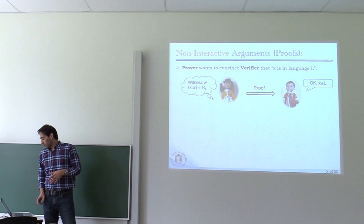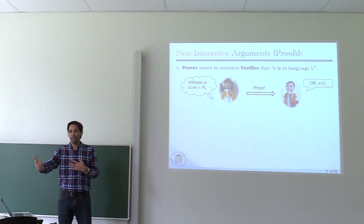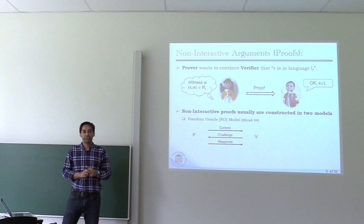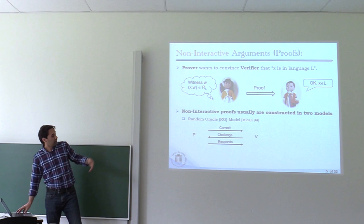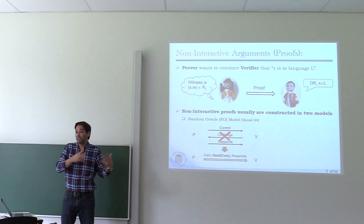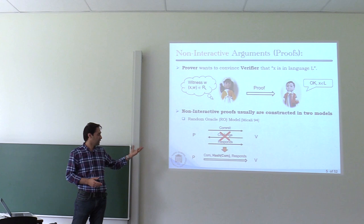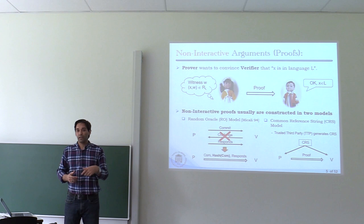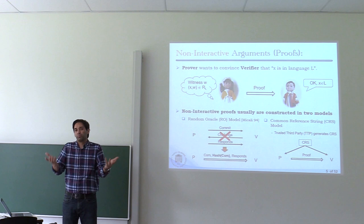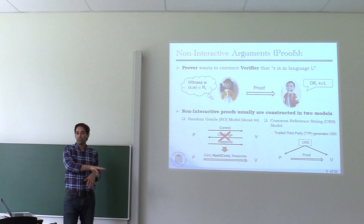In real life, this interaction is not easy because the verifier may not be online, so we are usually interested in non-interactive cases. To construct non-interactive systems, we have two well-known models. The first is the random oracle model, where based on the Fiat-Shamir transformation, instead of getting a challenge from the verifier side, you apply a random function to instantiate the random oracle. The prover can then send all three messages together and we don't need the verifier online. The second model is the CRS model, where we need a trusted party to generate the common reference string.